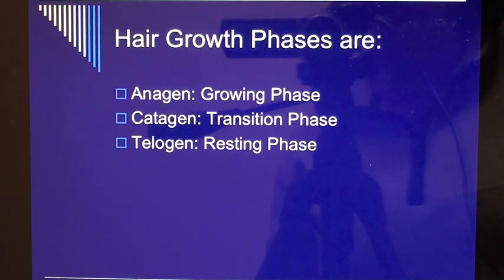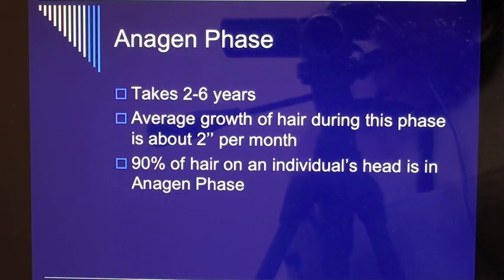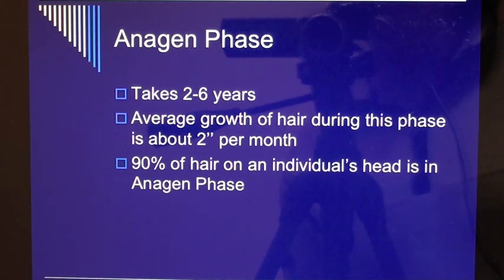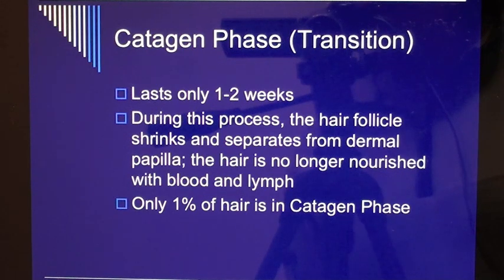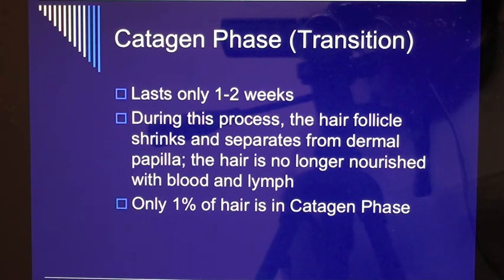Hair growth phases are: anagen (the growing phase), catagen (transition phase), and telogen (resting phase). The anagen phase takes two to six years, with average hair growth of about half an inch per month. Ninety percent of hair on an individual's head is in the anagen phase. The catagen transition phase lasts only one to two weeks, during which the hair follicle shrinks and separates from the dermal papilla, and the hair is no longer nourished with blood and lymph.